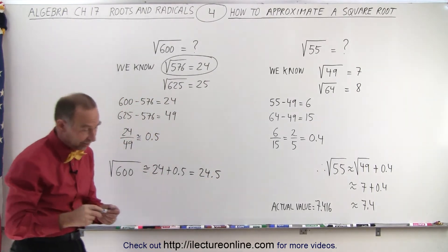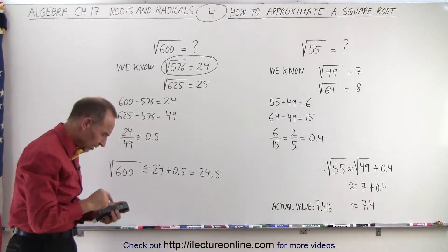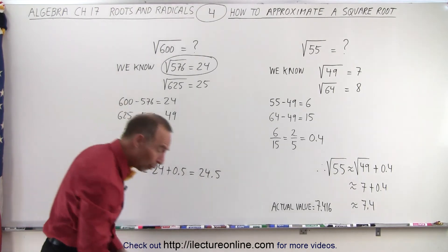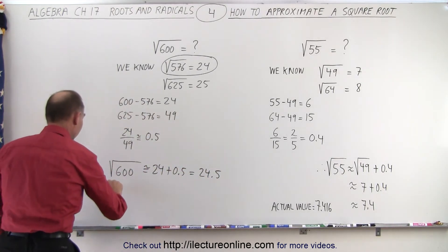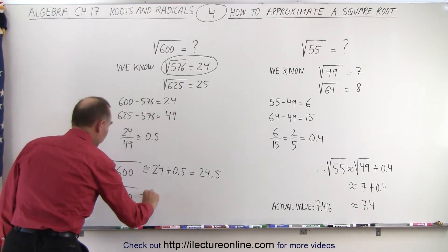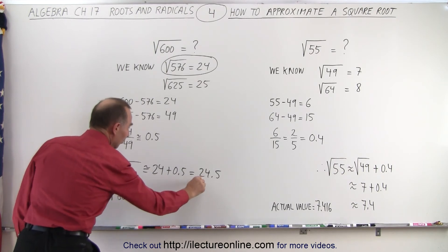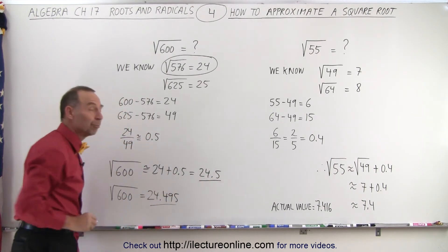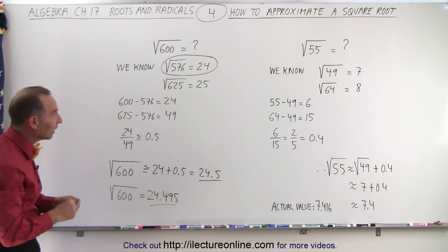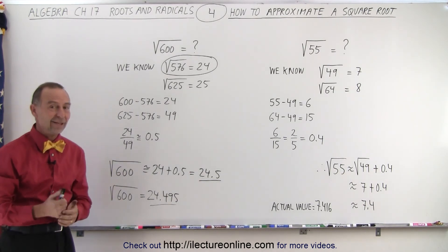Now let's grab a calculator and see how close we got. Taking the square root of 600, it's 24.495. So the square root of 600 is equal to 24.495. You can see that we got pretty close to the actual value by simply making a quick approximation. And that is how that's done.